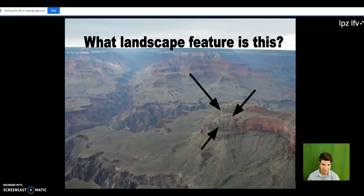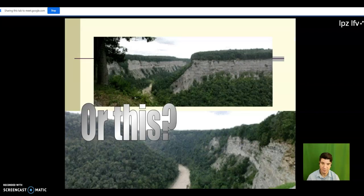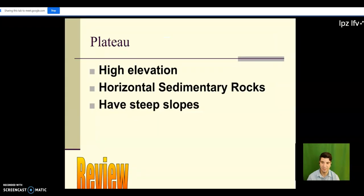So what is this thing? You can see the horizontal bedrock. It's definitely at a higher elevation. All right, right? So this thing is a plateau. This one, same deal. Plateau. So just a little bit of quick review. Plateaus are high elevation horizontal sedimentary bedrock and they have steep slopes.